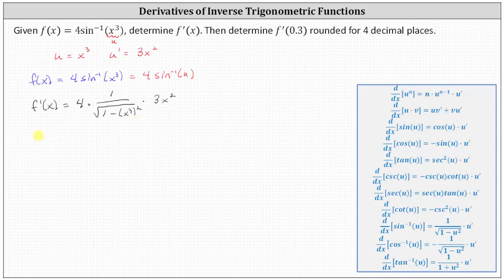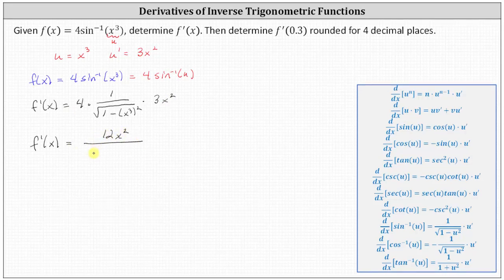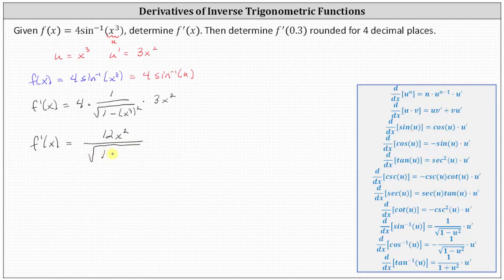And now let's multiply and simplify. f prime of x is equal to 12 x squared divided by the square root of the quantity one minus, when we have powers to powers, we multiply the exponents, which gives us a radicand of one minus x to the sixth.